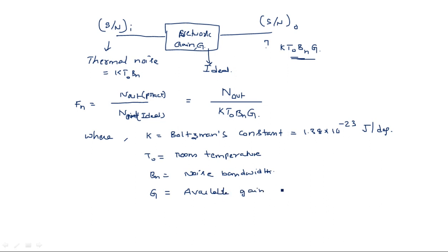Available gain G can also be expressed as S_out divided by S_in. If you take the second definition of noise figure — SNR of input divided by SNR of output — you can also derive that G equals S_out divided by S_in, where S_in is the original signal received and S_out is the signal available at the output after passing through the network.